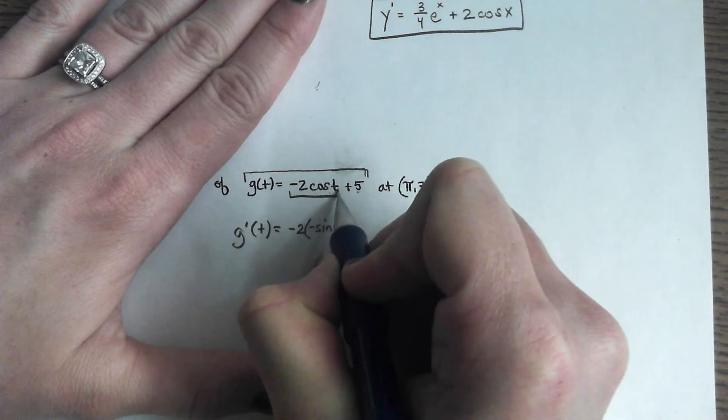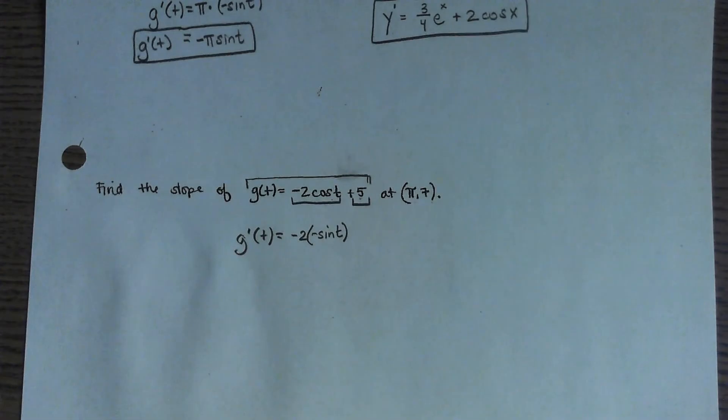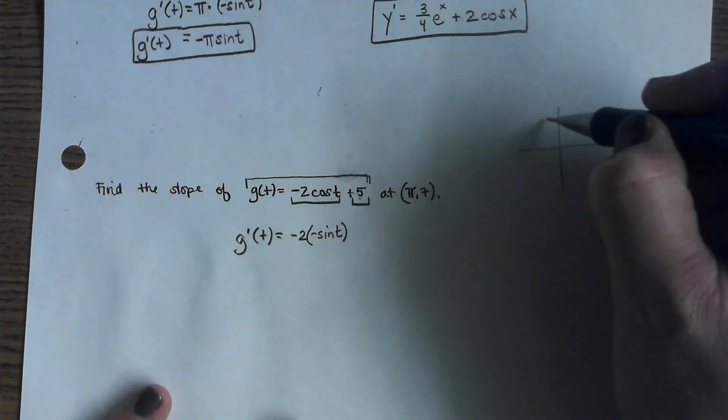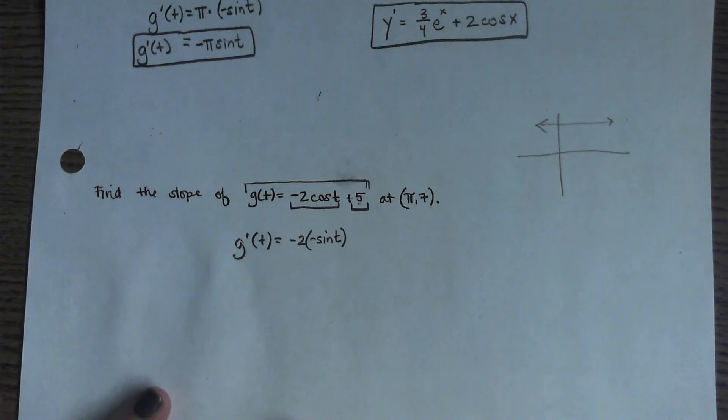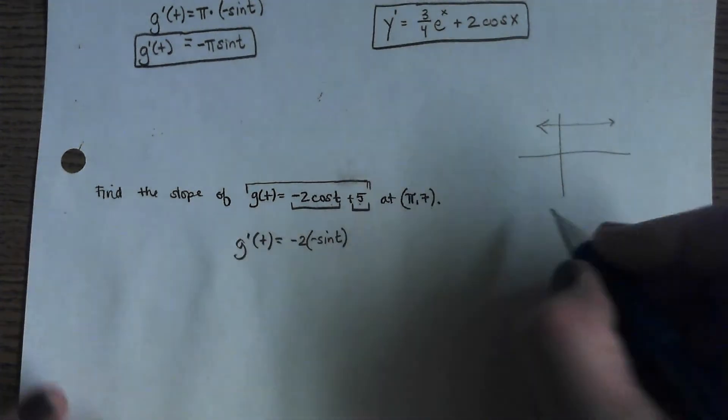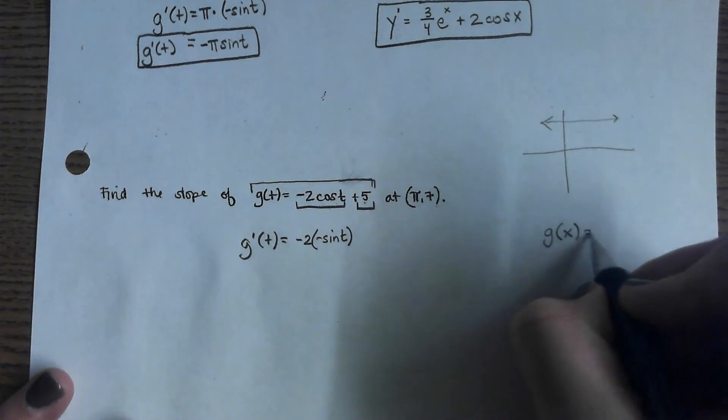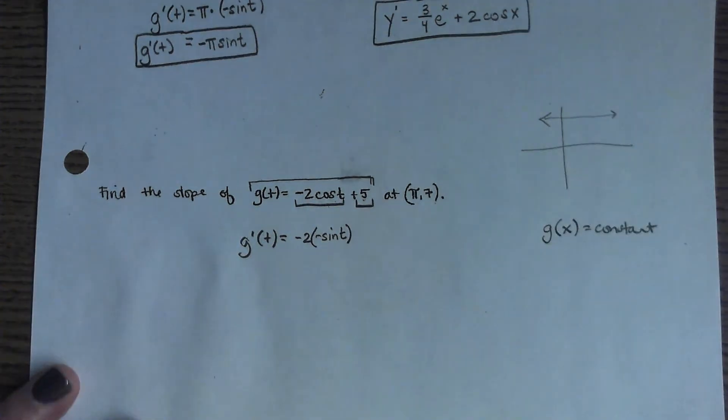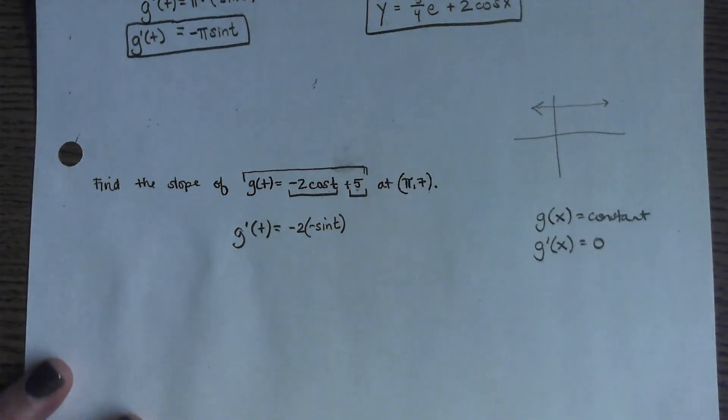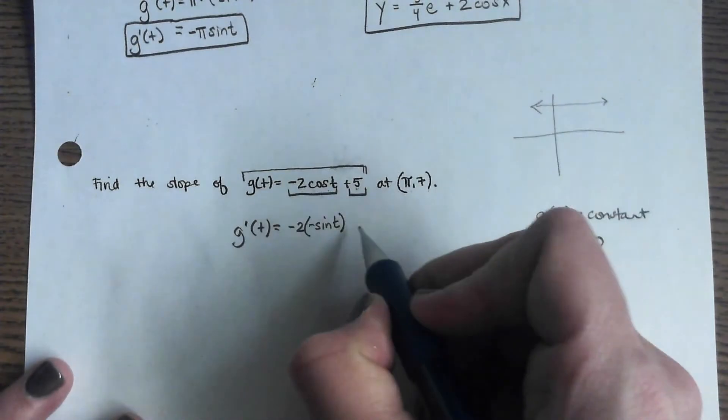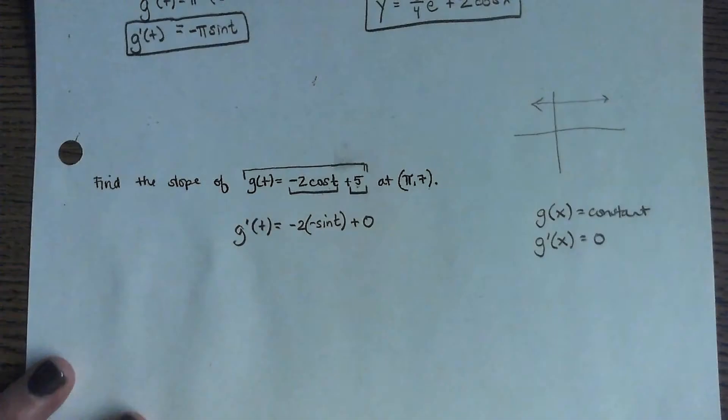I found the derivative of this piece and the derivative of this piece. If you have an equation that's just y equals 5, what's the derivative of that? Here's the line y equals 5. What's the slope of that? Zero. So if g of x equals a constant, then g prime of that is zero. Always. Because the slope is always zero. So this would just be like plus a zero at the end of it.